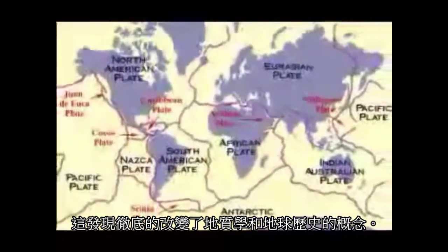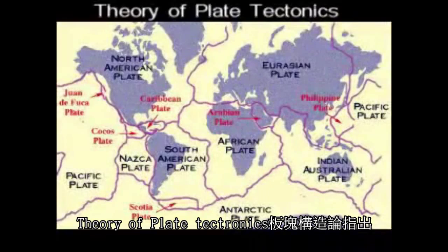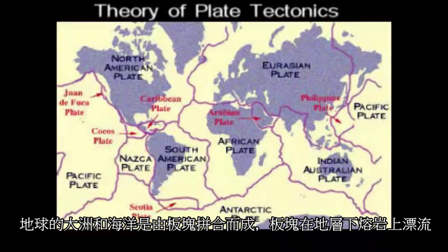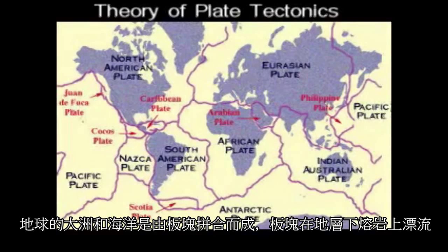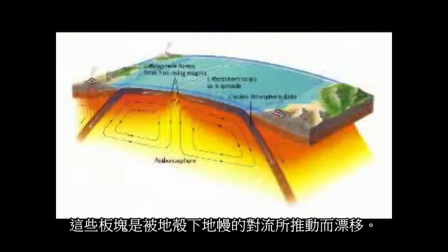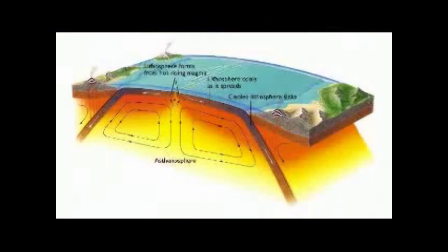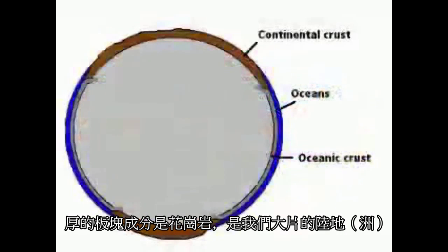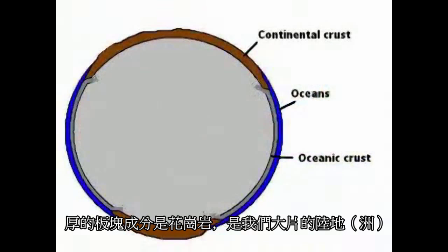Then in the 1960s, researchers made a discovery that transformed our understanding of the Earth and its geological history. The theory of plate tectonics concludes that we live on pieces of crust floating on partially melted rock as they drift around the Earth's surface. It's likely these crustal plates are driven by convection currents in the Earth's upper mantle. Thicker crustal plates, made mostly of granite, make up our continents, while the oceans mostly fill the lower and thinner crustal plates, made of basalt.